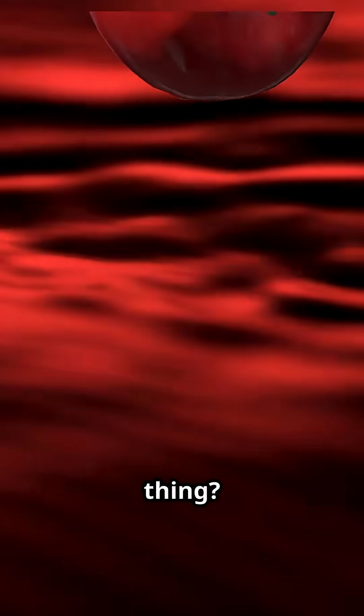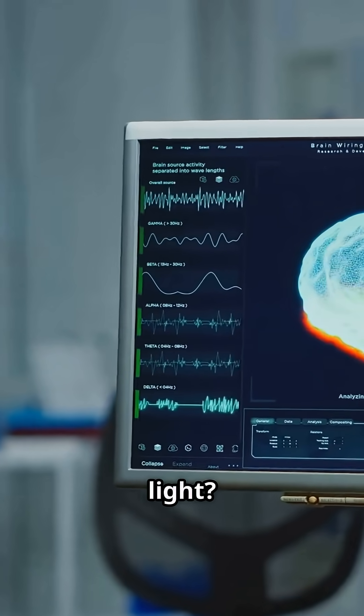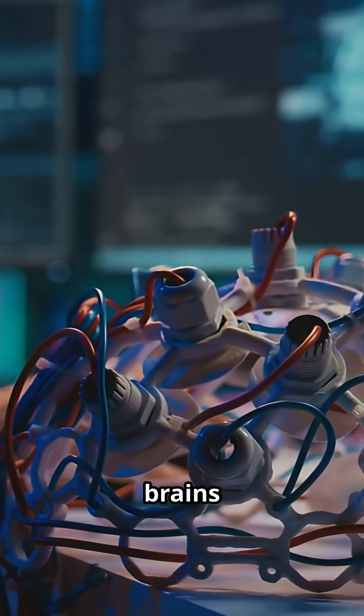Is red a thing, or just our brains interpreting 700 nanometers of light? Maybe math is just how our brains process the world.